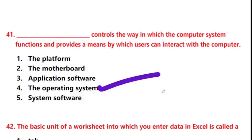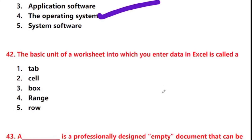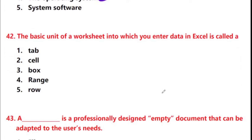Next question: the basic unit of a worksheet into which you enter data in Excel is called — options: tab, cell, box, wrench, row. Answer is option 2: cell.